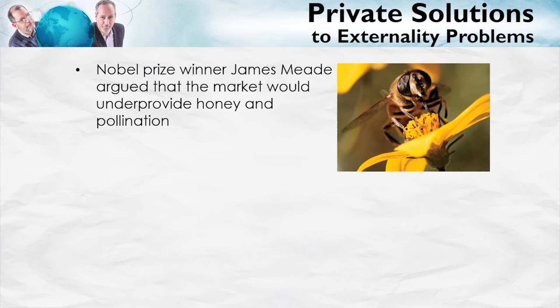The Nobel Prize winning economist James Mead argued that the market would under-provide honey and pollination services. Bees, Mead argued, do two things. First, they create honey. That honey is bought and sold in markets, and there's a price for the honey. Second, however, bees will also fly out and they'll pollinate the crops of nearby farmers. That's a very useful service, but Mead argued that the farmers wouldn't be paying for that service. The pollination services, Mead argued, were an external benefit.